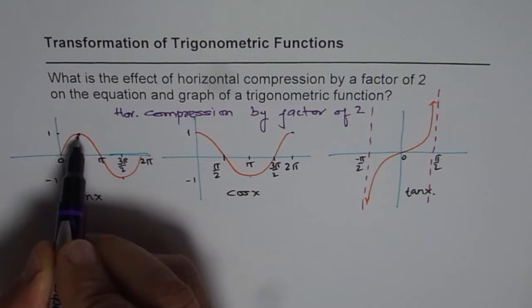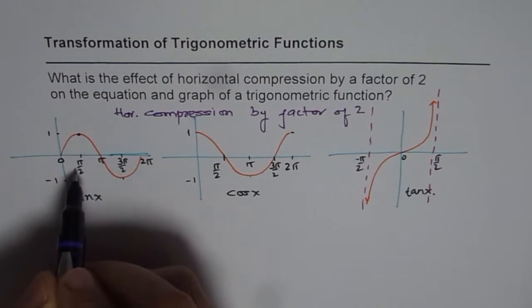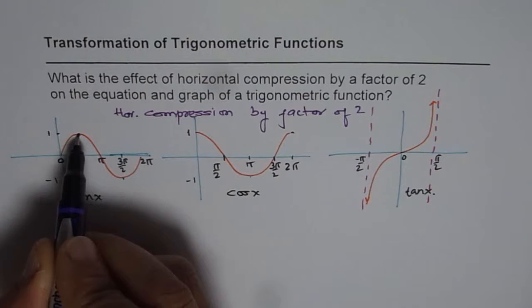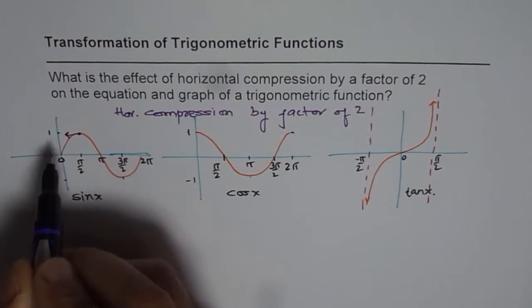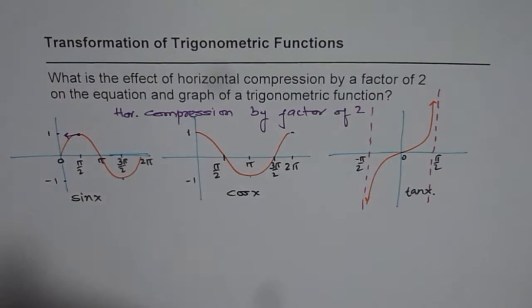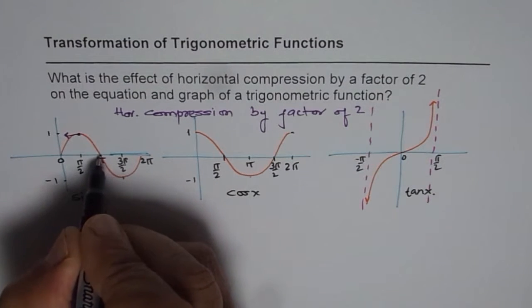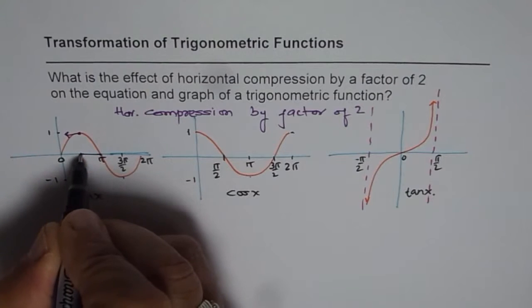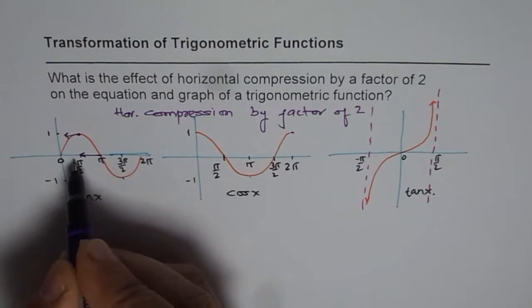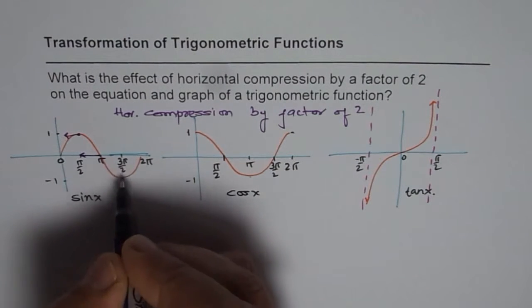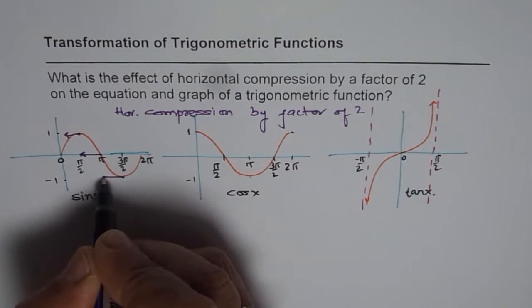So this function, sine function has maximum at 1, when it is compressed horizontally by a factor of 2, then this maximum will not appear at pi by 2, but will appear at pi by 4. That is what it means. The 0 will not appear at pi, but pi times half, which is pi by 2. So the graph kind of compresses.